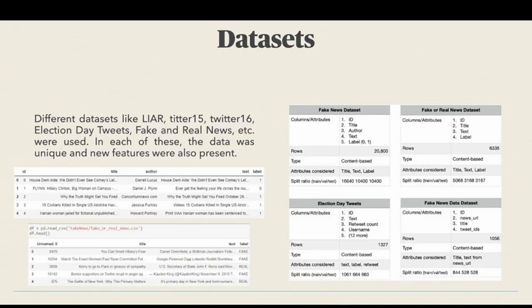All the datasets have labels which are binary classified or multi-class classified. The different columns serve different equal importance. Most of the datasets have news text, news URL, author, and subject of the news which can be used in our detection.